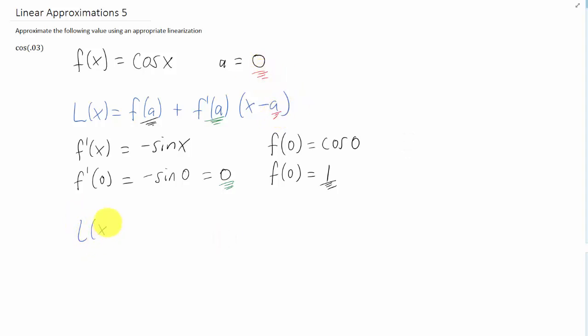And all of that is going to give us the following linearization. Well, how about that? The tangent line that we got for this cosine graph at a equals 0 turns out to just be 1 plus, well, 0. So just 1.